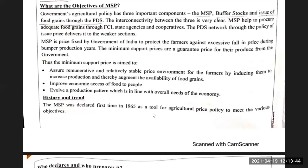MSP is the price fixed by the Government of India to protect the farmer against excessive falling prices during bumper production. The purpose of MSP is that if there is a lot of production, prices may fall, causing losses to farmers. So the government fixes the price in advance so that the farmer knows the minimum they will receive. Thus, MSP aims to ensure a remunerative and relatively stable price environment for farmers, inducing them to increase production and augment the availability of food grain.